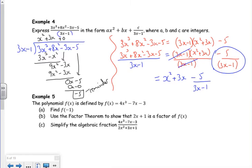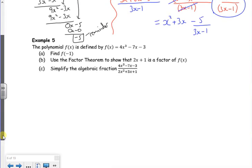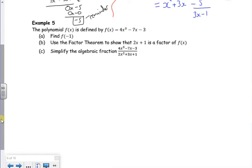Let's have a look at example 5. Example 5 says f(x) is there. Find f(-1). So f(-1) is 4 lots of minus 1 cubed minus 7 lots of minus 1 minus 3. Minus 1 cubed is minus 1, so that's minus 4. That's a plus 7. That's a minus 3. f(-1) is 0, which is quite nifty really and really important.